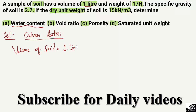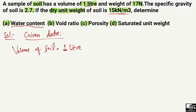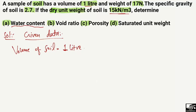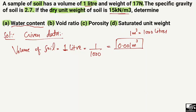The volume of soil is 1 liter. Since the dry unit weight is in kilonewton per cubic meter, we need to convert liters to cubic meters. We divide by 1000, because one cubic meter equals 1000 liters. So the volume of the soil sample is 0.001 cubic meters.